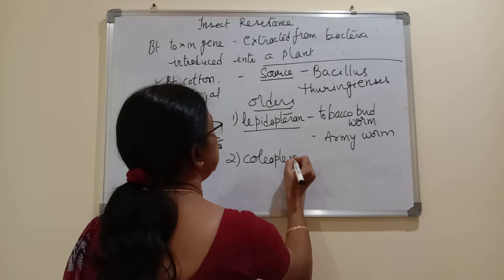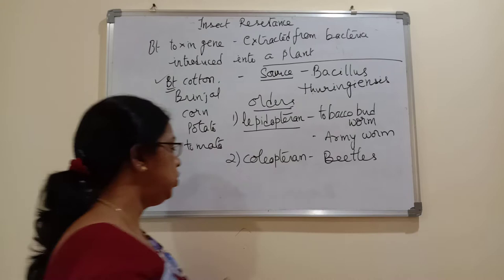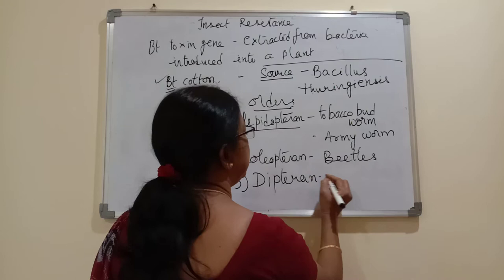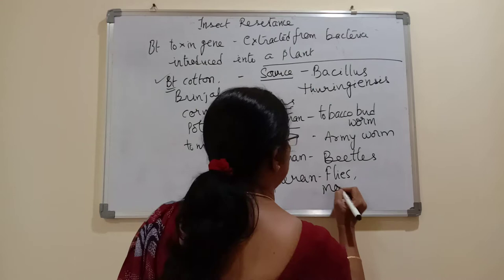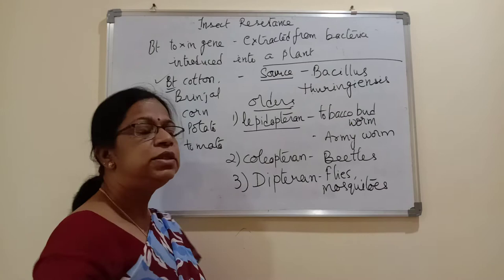The second order is Coleoptera — coleopteran insects — and the main examples are beetles. The third category is Diptera — dipteran insects — and the examples are flies and mosquitoes. So this toxin produced by the bacterium can affect these three types of insects.